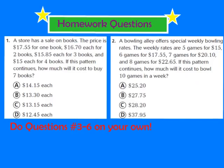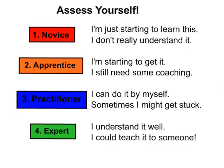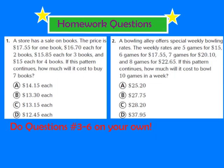Your homework questions for tonight will be to complete question number 1 and question number 2, as well as numbers 3 through 6, found in your GoMath workbook on page 72. Somewhere on your homework page, let me know: do you feel like you're a 1 (novice), a 2 (apprentice), a 3 (practitioner), or a 4 (expert)?